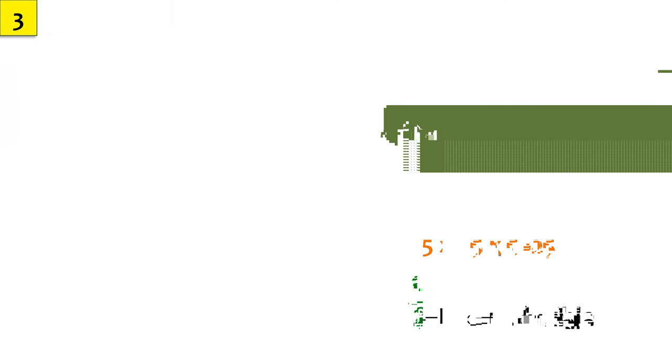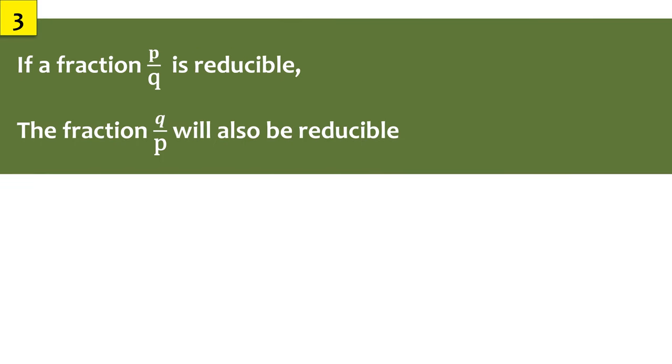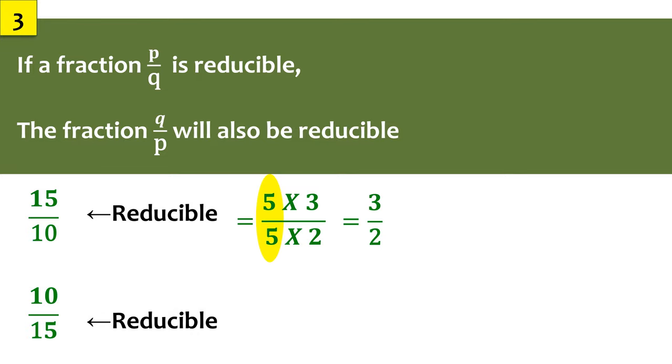Another thing we need to know is if a/b is reducible, b/a will also be reducible. For example, if 15/10 is reducible, 10/15 is also reducible. Just that 15/10 will be reduced to 3/2 and 10/15 will be reduced to 2/3.